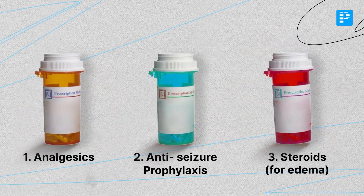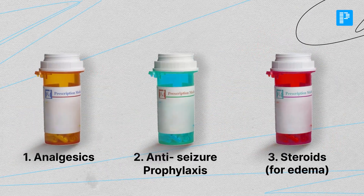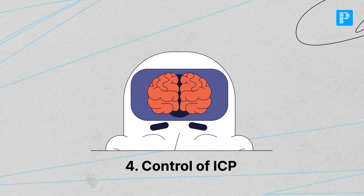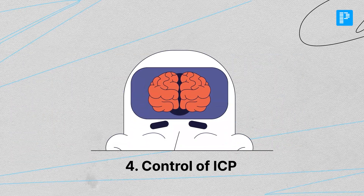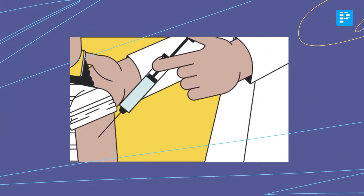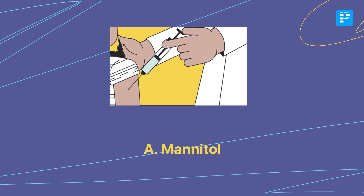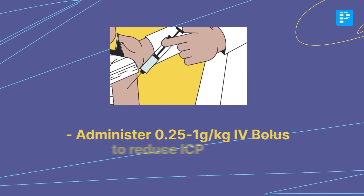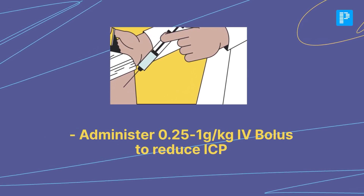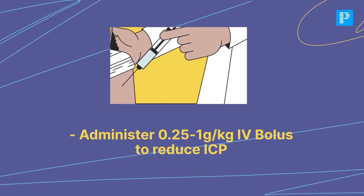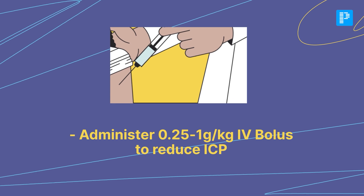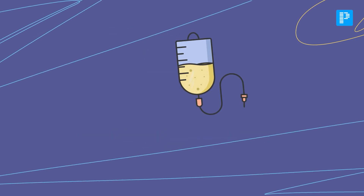Steroids can be given for edema. To control intracranial pressure, use mannitol — administer 0.25 to 1 gram per kg IV bolus to reduce ICP.